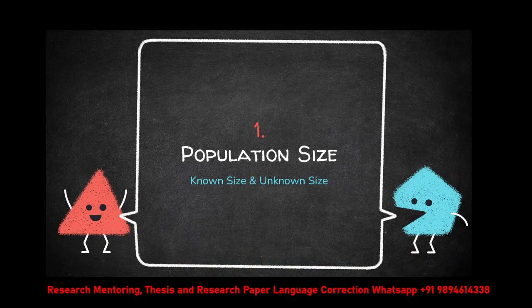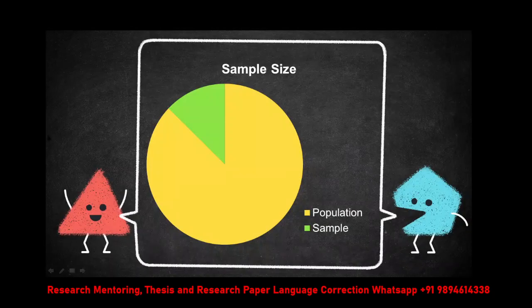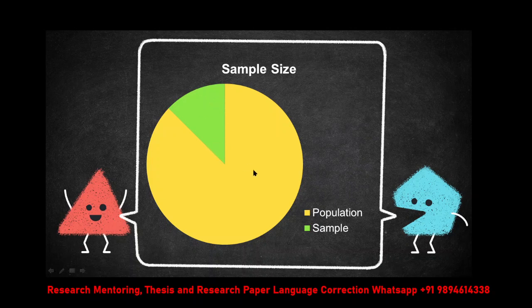First, population. What is meant by population? If you look at this particular chart, the whole lot is called population. Within this entire lot, you will not be able to study everything. That is why you select one chunk of the population — that is called a sample.